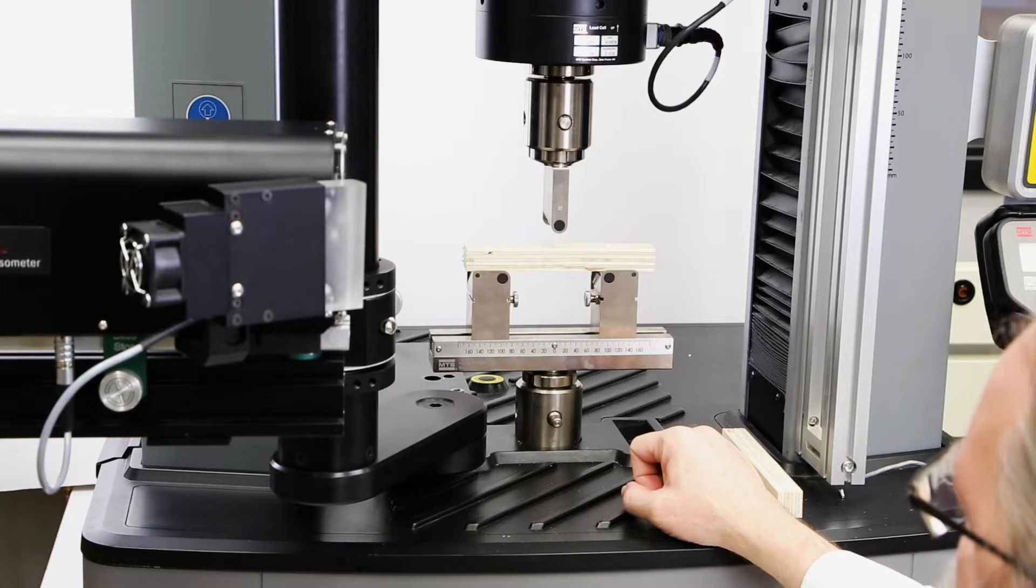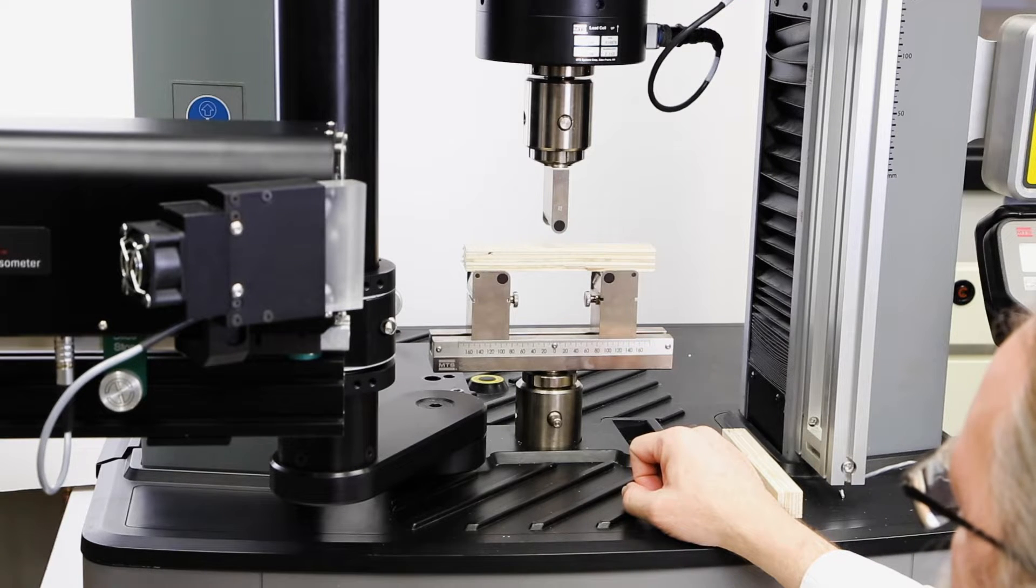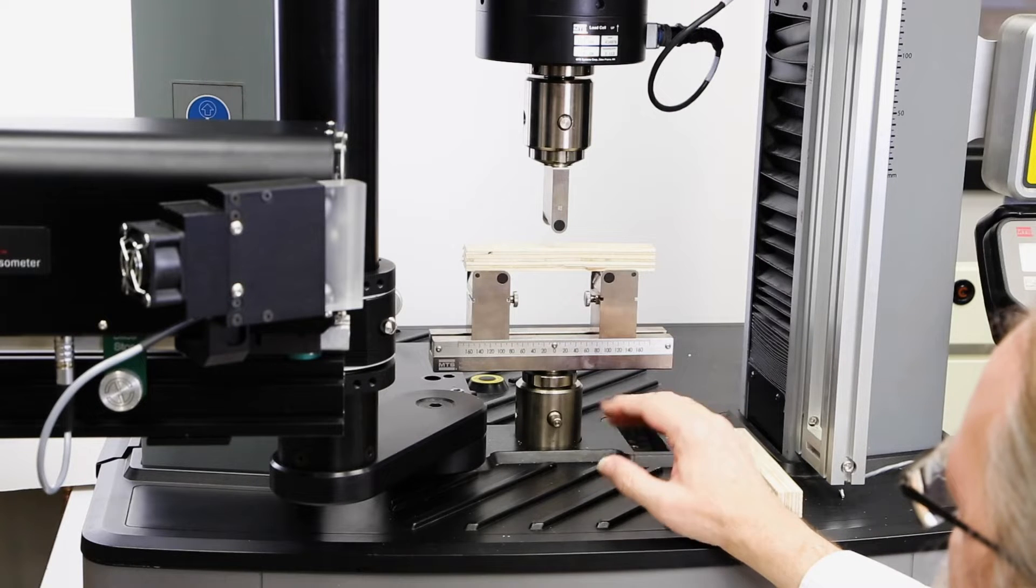And understanding those different levels requires additional information, additional data. Here we have a simple three-point bend test on a plywood specimen. Plywood is a composite of different wood layers. Oftentimes the grains are in different directions.